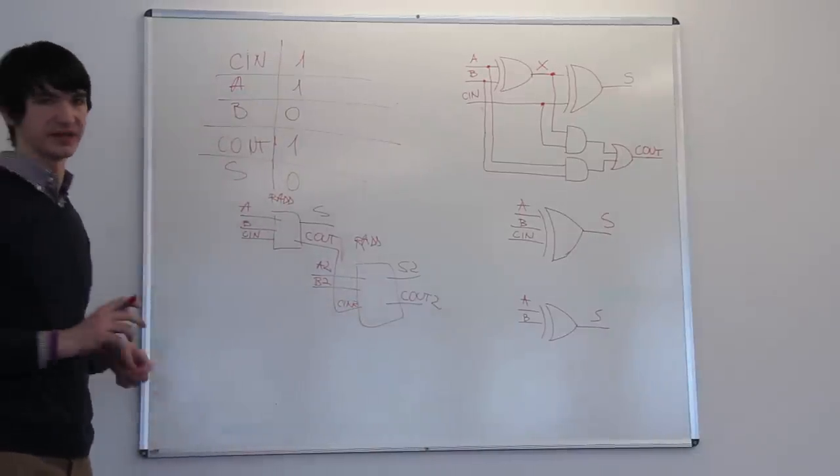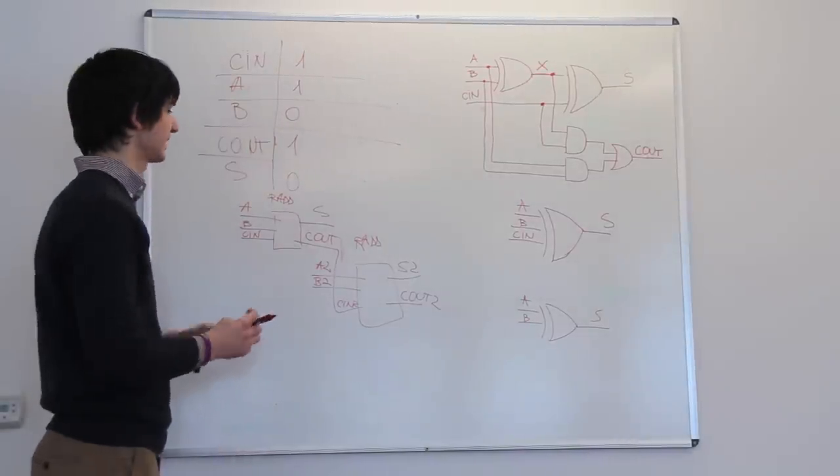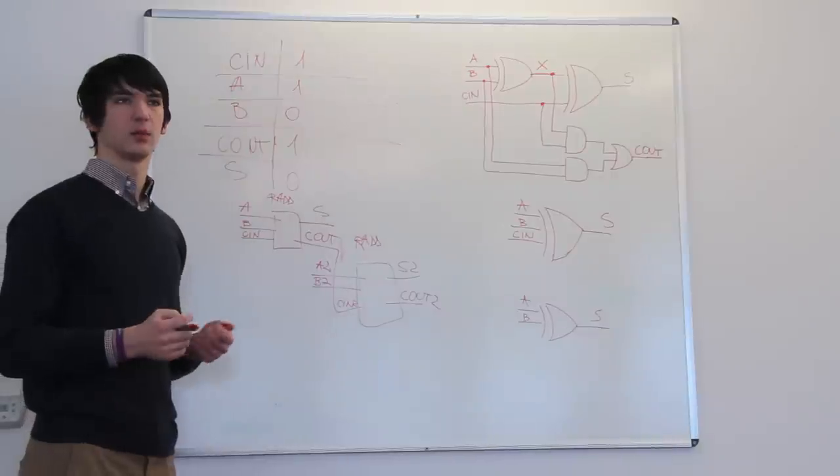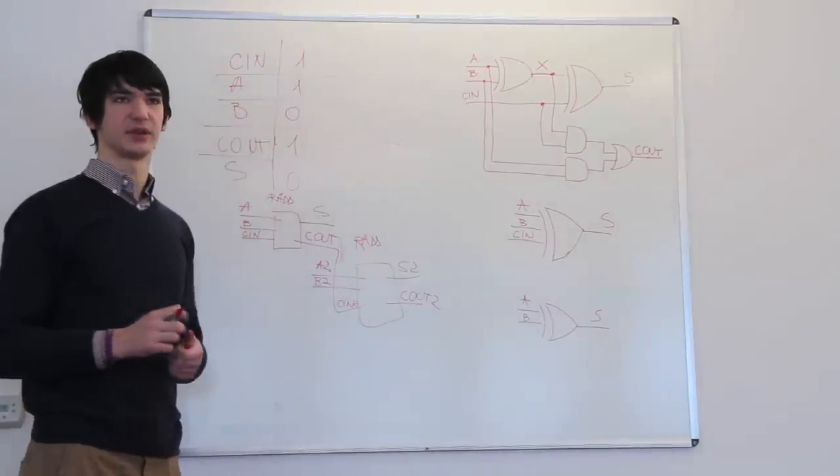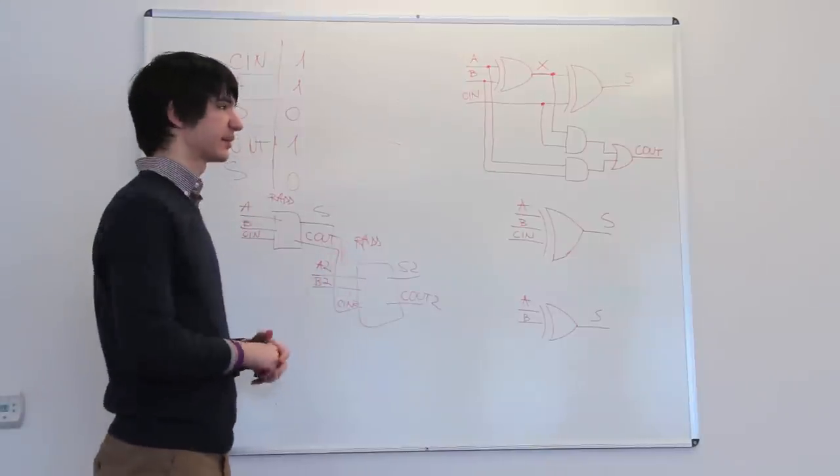What this does is binary addition of a two-digit binary number. So it can add numbers from 0 to 3. This is the basic idea of the ripple adder.